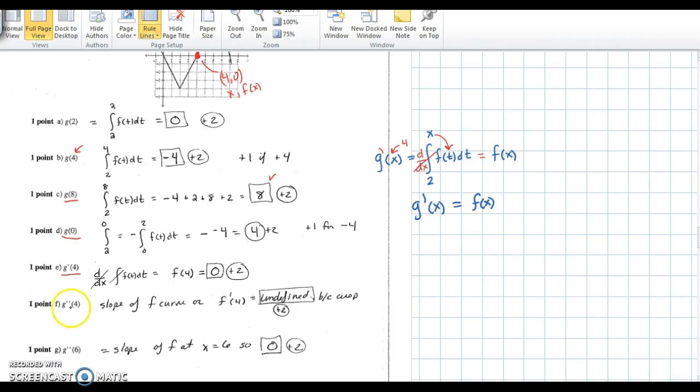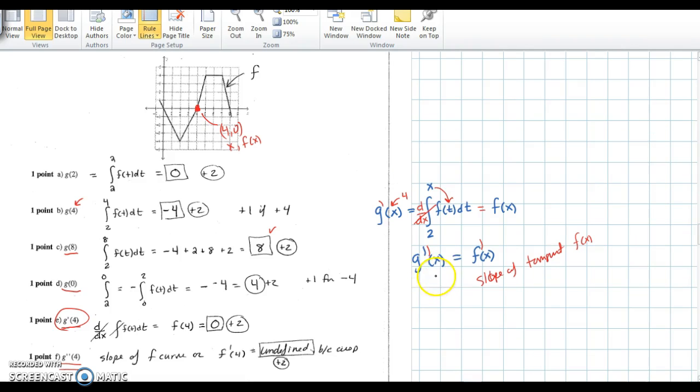In the problem before, we were asked for the first derivative of g at 4. Now we're asked for the second derivative of g at 4. So if I take one more derivative on the left, I must take one more derivative on the right. So we're really looking for the derivative of f, or the slope of the tangent of f of x. So as we go back and look at our picture, again at 4. So at 4 happens to be a cusp where we come in at different slopes left and right. Since there's a corner there, this is undefined.